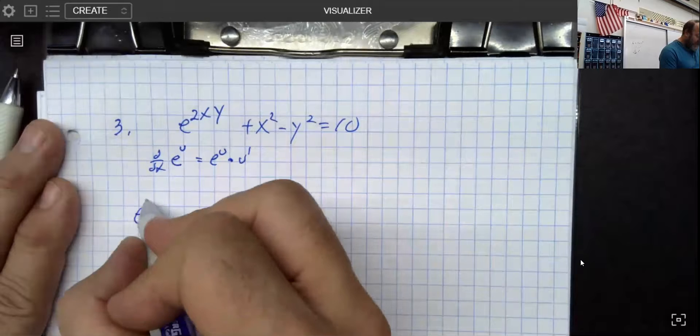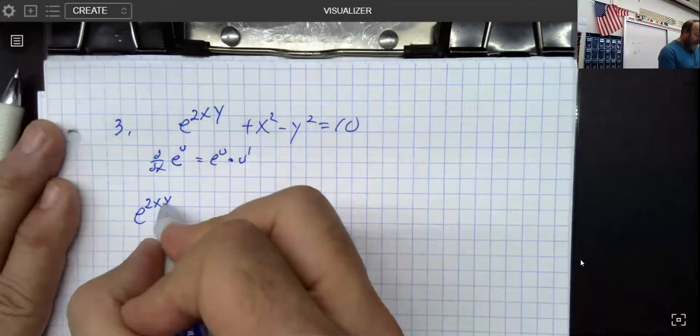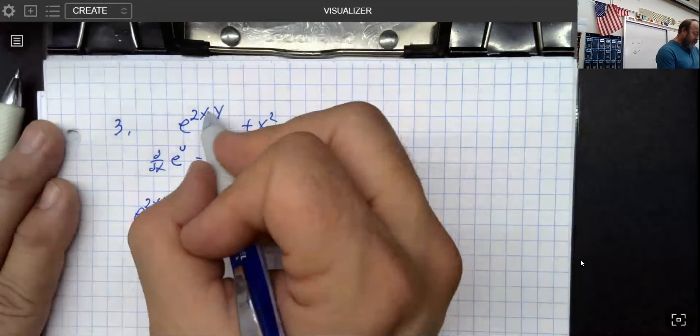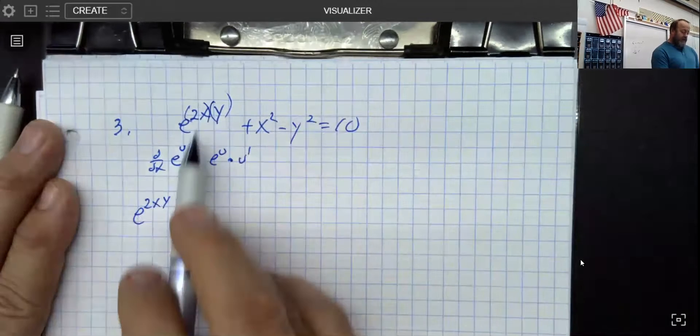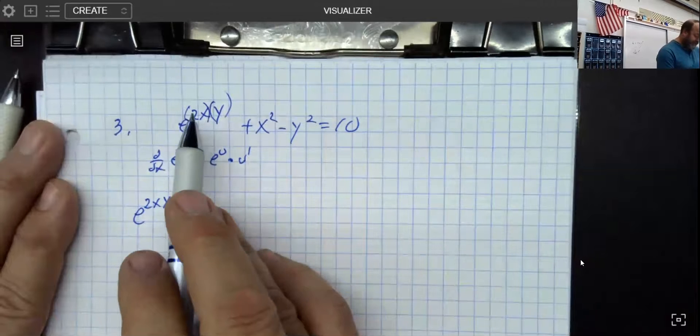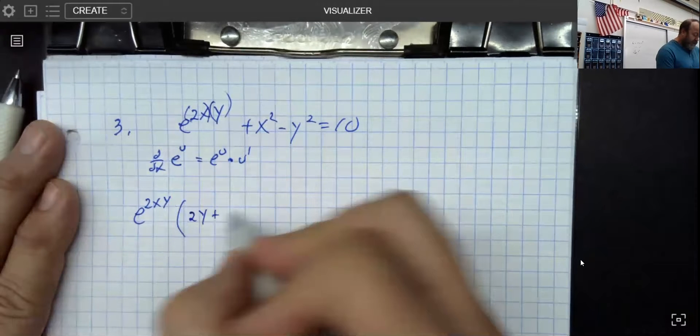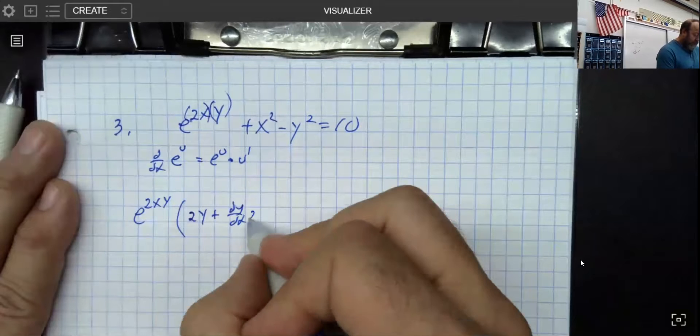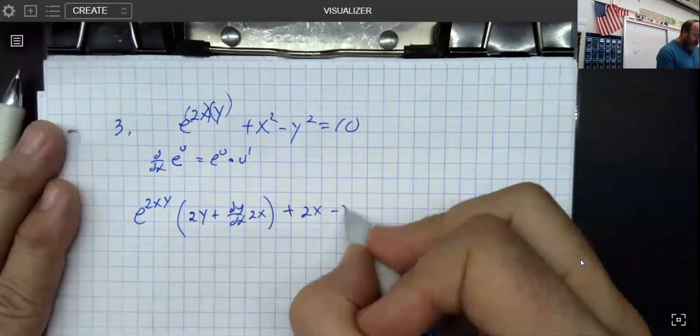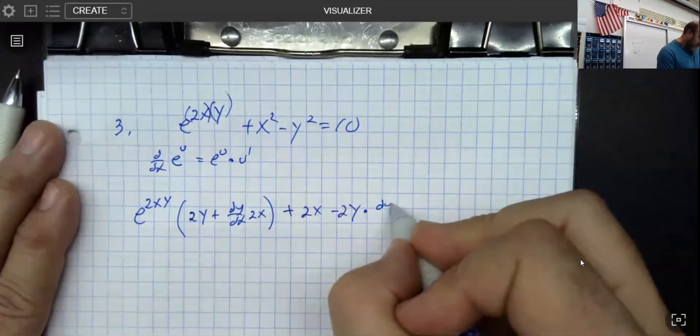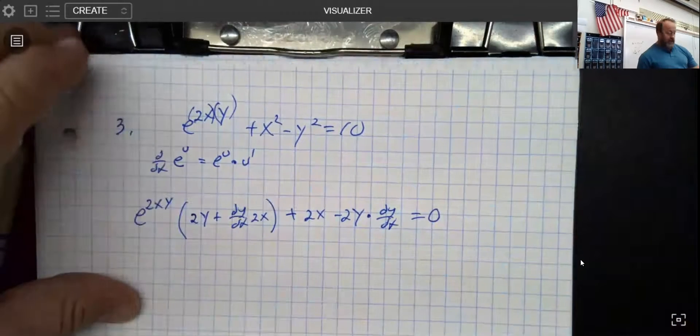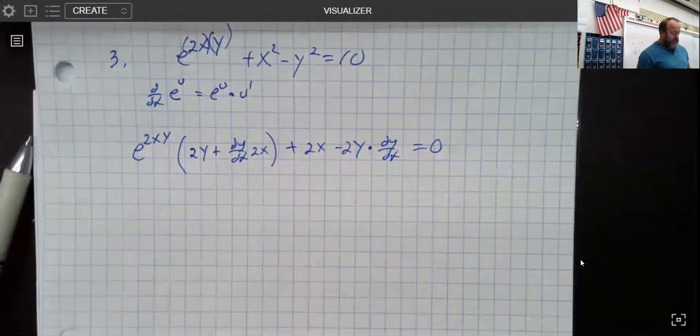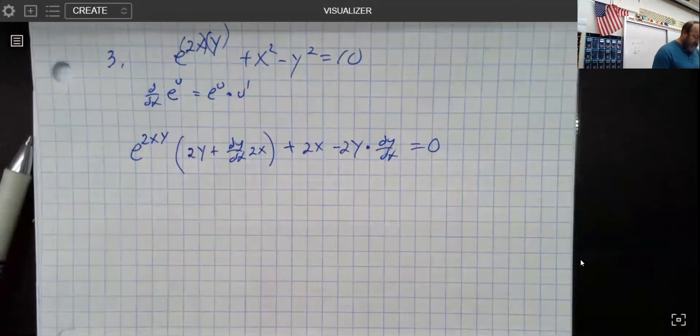The derivative of e to the 2xy is e to the 2xy, okay, but I need to now multiply by the derivative of that exponent. And so when I look at the derivative of the exponent, I'm going to think of that as a product. The derivative of the first, or f prime g plus g prime f. And then over here it gets a little bit easier, and of course the derivative of 10 is zero. Now I did think a little bit about whether it would be worthwhile to do some of those substitutions like I did earlier in class, but I did decide that that was probably not the wisest thing to do.